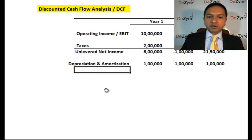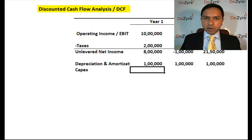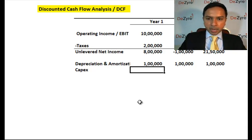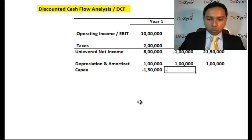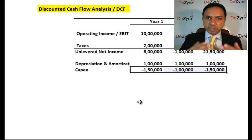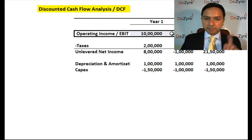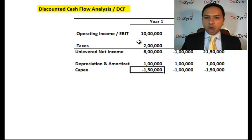You add back D&A to your unlevered net income because it's a non-cash expense that was treated as a cash expense. The next item is CapEx — capital expenditure — which is a real cash expense found on the balance sheet, not the income statement. Let's say CapEx is 1 lakh in year one and 1.5 lakhs in years two and three. Since CapEx is a cash expense not captured in operating income, you subtract it.